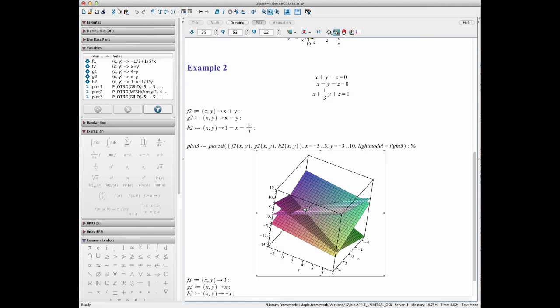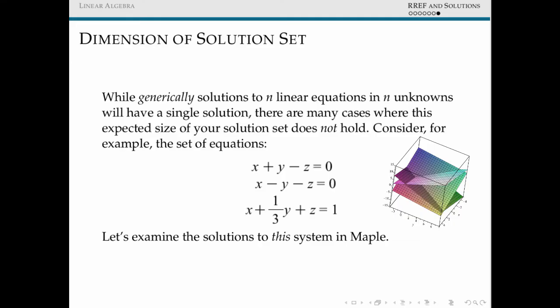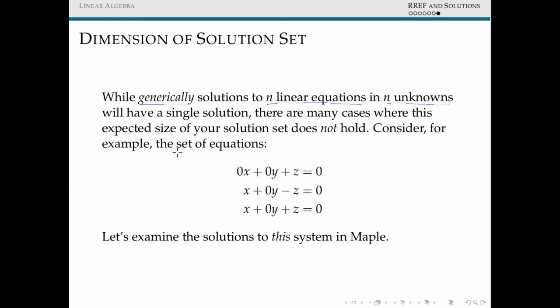Let's look at an example that while we have three linear equations and three variables, we actually won't have this nice, like, single, unique solution. In our previous example, we saw that we looked at three linear equations in three unknowns, and we saw that there was a unique solution where all three of the planes that those equations corresponded to intersected. This holds fairly generally, and so the idea is generically, which what generically means is if you randomly chose coefficients of all of your equations, you'd expect, when you have n linear equations in n unknowns, to have a unique solution that exists. There are going to be lots of cases where your expected size of the solution set doesn't hold, so let's look at this system of three linear equations and go back to Maple and see what happens.